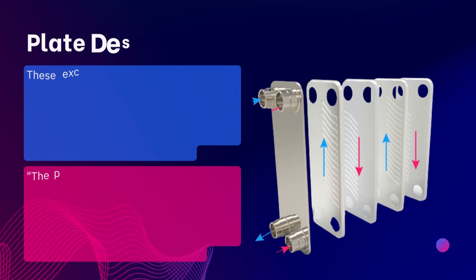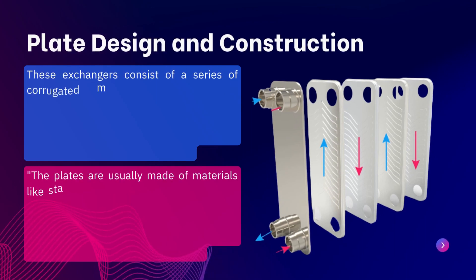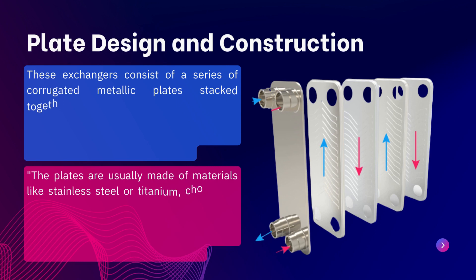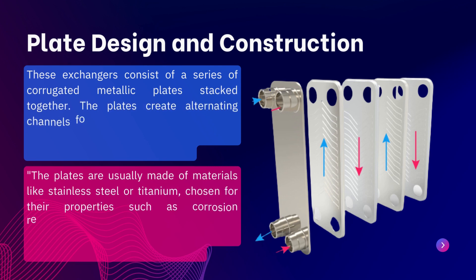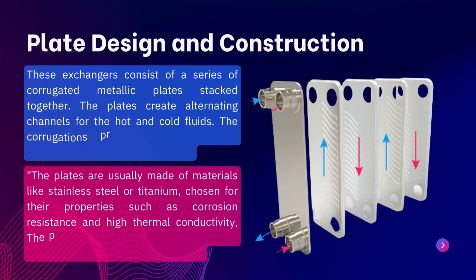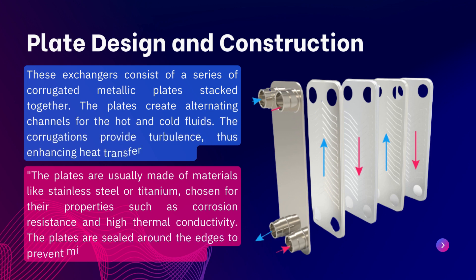Looking at the design and construction of a plate heat exchanger, as we can see in the figure, it consists of a series of corrugated metallic plates stacked together. Alternating channels are created for hot fluid and cold fluid. Turbulence is created through the corrugations, which increases heat transfer efficiency. The plates are generally made of stainless steel or titanium, selected for their corrosion resistance and high thermal conductivity. The plates are sealed around the edges to prevent leakage and fluid mixing.